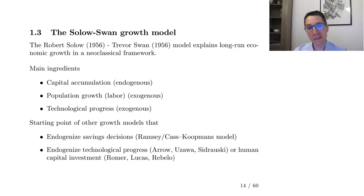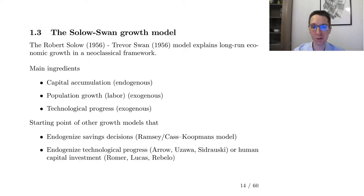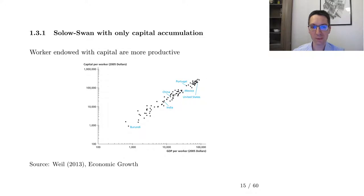To make it easier to understand, I have decided to start with a simple version of the model with only capital accumulation, then introduce only population growth, and then only technological growth. So we start with the Solow-Swan model with only capital accumulation.